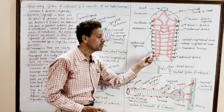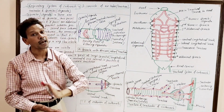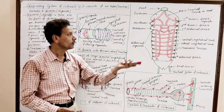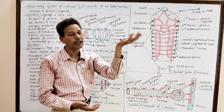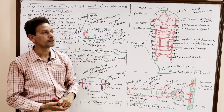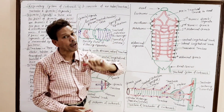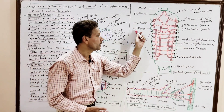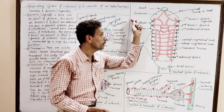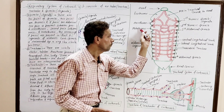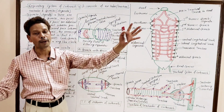The abdominal spiracles are eight pairs, present in the first eight abdominal segments. Note that the first pair of thoracic spiracles as well as the first pair of abdominal spiracles remain open permanently.